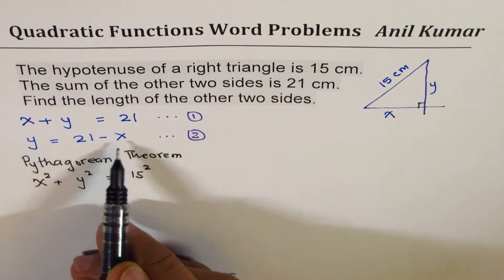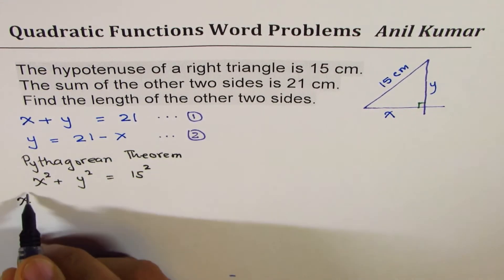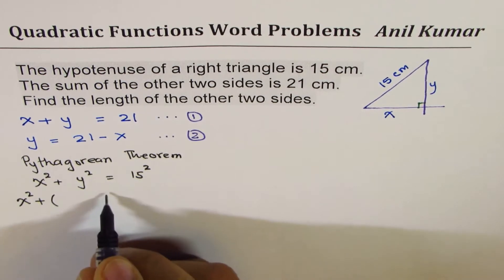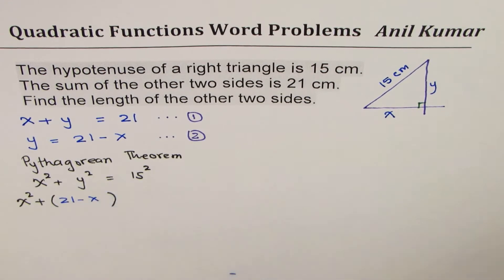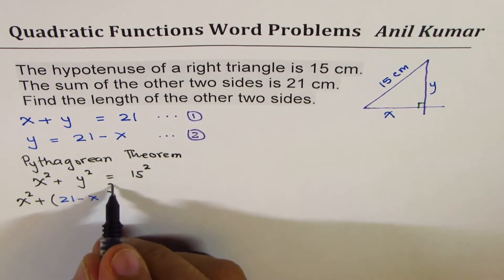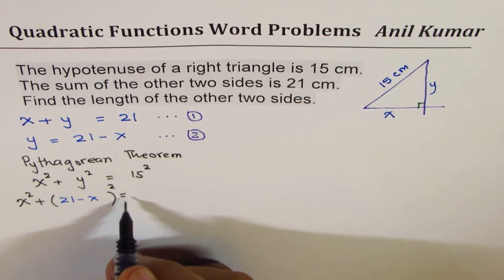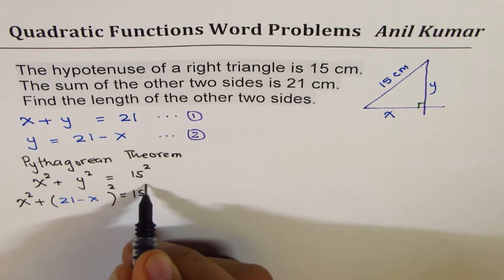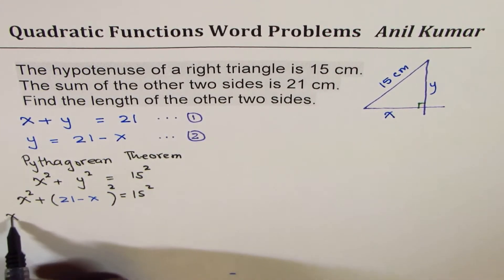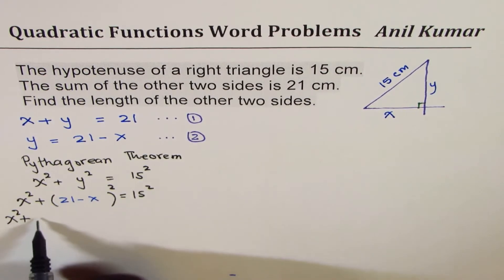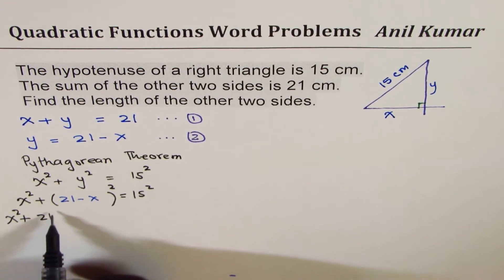So I substitute the value of y from equation 2, and this equals 15². Let's open this bracket. We get x² + (21 - x)² = 15². When you square this, we get x² + 21² - 2(21)x + x² = 15². Let's use the calculator to find what these squares are, then we'll simplify.